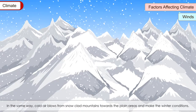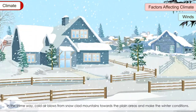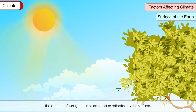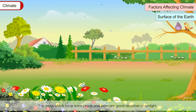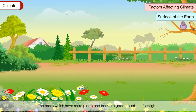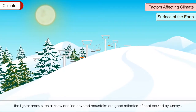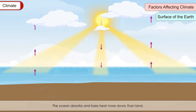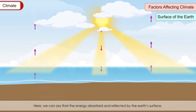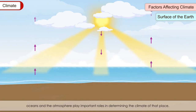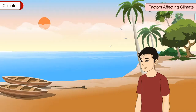Cold air blows from snow-clad mountains towards the plain areas and creates winter conditions. Surface of the earth: An important factor which has a great influence on climate is the surface of the earth. The amount of sunlight absorbed or reflected by the surface determines how much heating occurs. Areas with more plants and trees are good absorbers of sunlight. Lighter areas such as snow and ice-covered mountains are good reflectors of heat. The ocean absorbs and loses heat more slowly than land. The energy absorbed and reflected by the earth's surface, oceans and the atmosphere play important roles in determining the climate of a place.